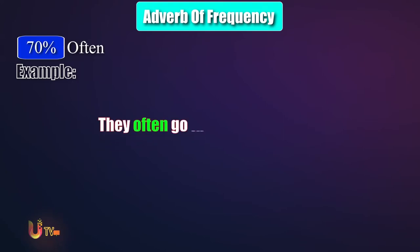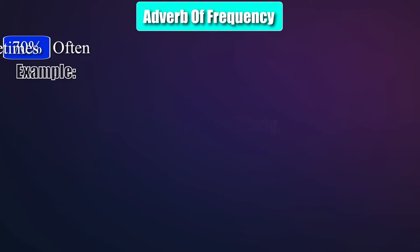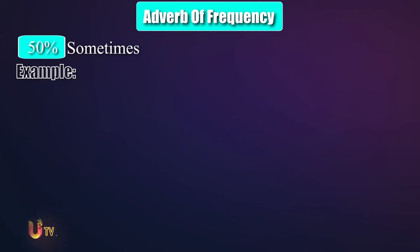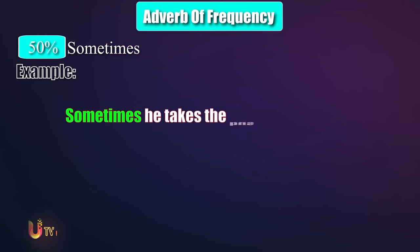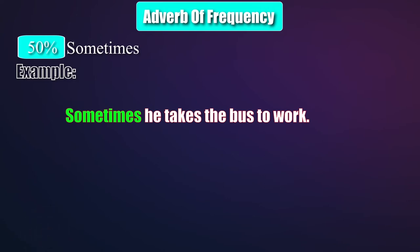They often go to the library. 'Often' expresses the frequency of an event that happens frequently but less than 'usually'. Sometimes it takes a long time to work. 'Sometimes' shows the 50% repetition of an action, which is lower than 'often'.